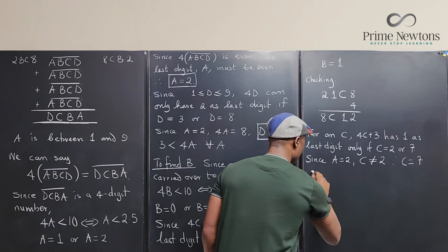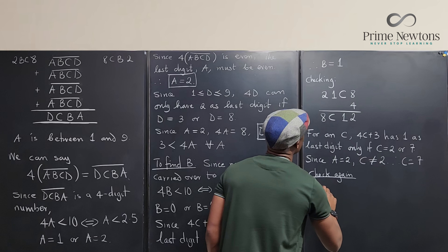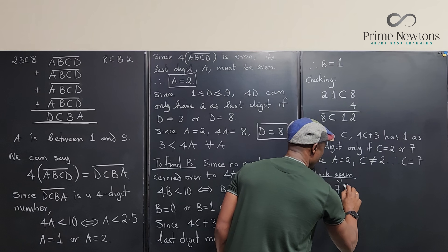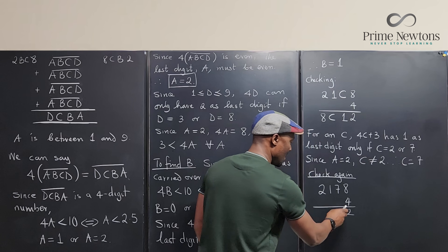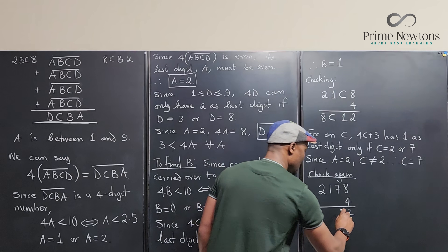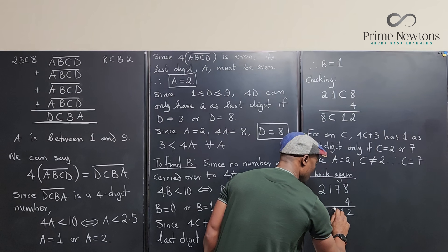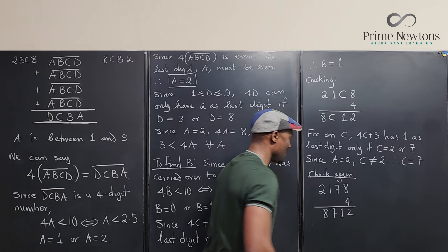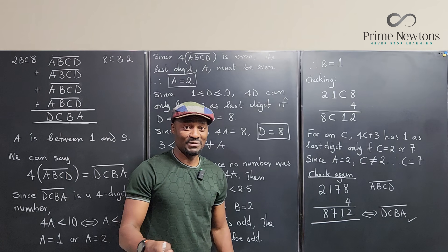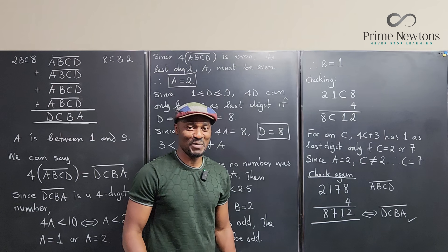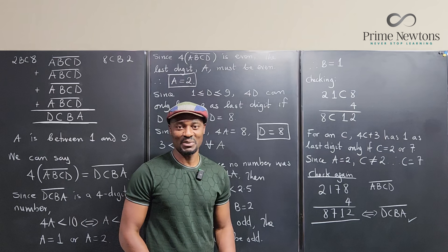Let's verify: the number is 2178. Multiply by 4: 4×8 = 32, write 2 carry 3; 4×7 = 28, plus 3 = 31, write 1 carry 3; 4×1 = 4, plus 3 = 7; 4×2 = 8. So 2178 × 4 = 8712. The digits reversed — it works! I hope this was fun. If you solved it a different way, leave it in the comments. Never stop learning — never stop learning, stop living. Bye!